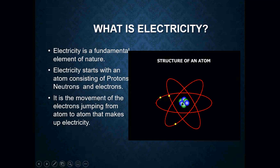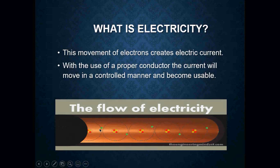Here we have a structure of an atom. We have our protons and neutrons sitting in the nucleus of the atom, but it is the movement of the electrons going around and around that's going to jump from one atom to the next. As we can see in this animation, the electron just moves from one atom to the next all the way down. The movement of the electrons is what creates electric current. With the use of proper conductors, the current will move in a controlled manner and become usable.